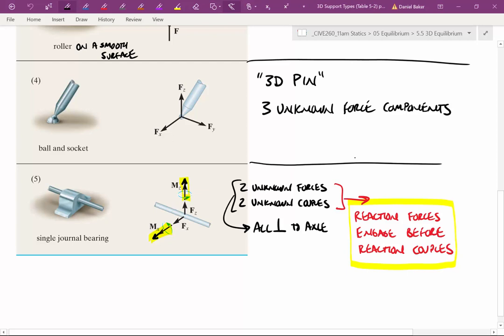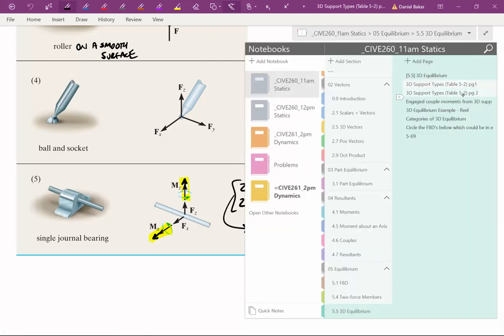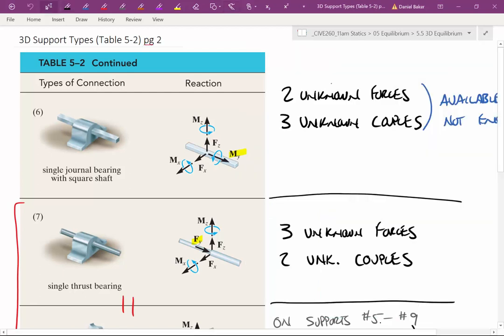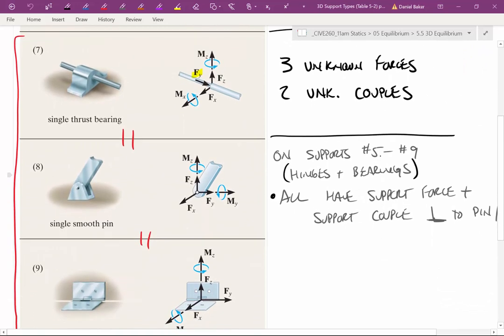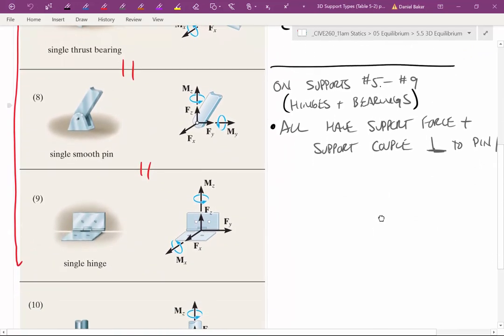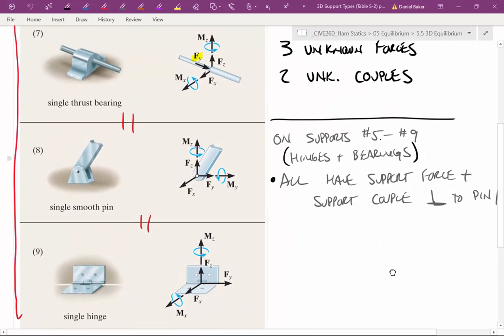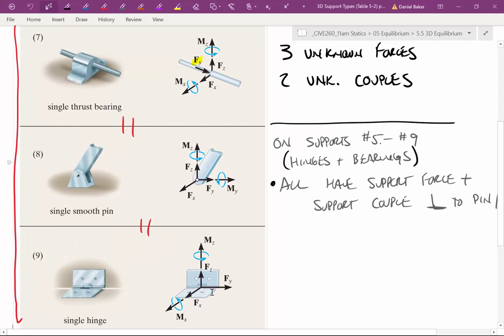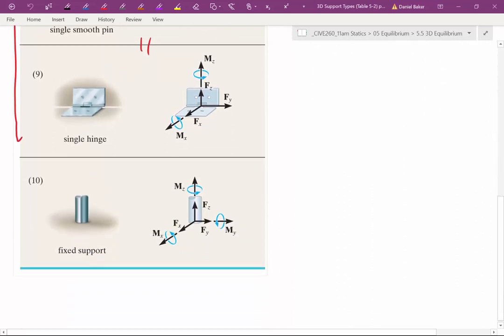Any kind of bearing will have a minimum of these four. Then we'll add in a couple in other directions depending on the type of system. Square shaft adds resistance to rotation about the axle. A thrust bearing adds resistance to translation of the axle. Thrust bearing, smooth pin, single smooth pin, and also a hinge all act the same way with this additional force along the pin or axle itself, in addition to the pair of forces perpendicular and the pair of moments perpendicular. The last support is the fixed support having three forces in all three directions and three resistant couples in all three directions.